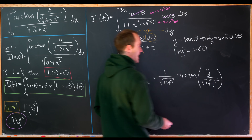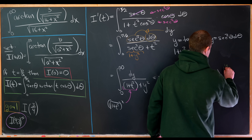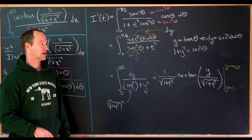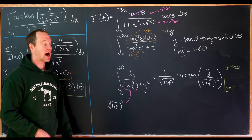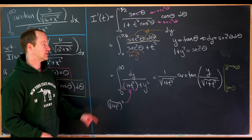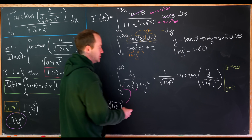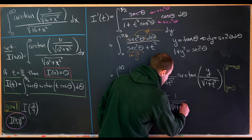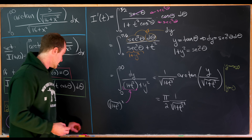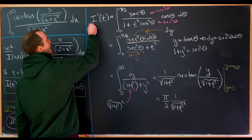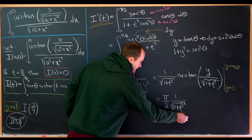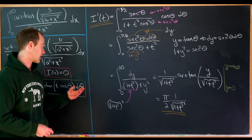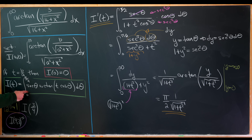Evaluating at y equals 0 and as y tends to infinity: arctan of 0 is 0, so the lower bound contributes nothing. The inverse tangent tends to pi over 2 as its argument tends to infinity, so the upper bound gives pi over 2. This tells us I prime of t equals pi over 2 times 1 over the square root of 1 plus t squared. Together with our initial condition, we've built a differential equation for I.